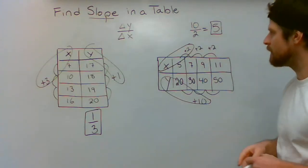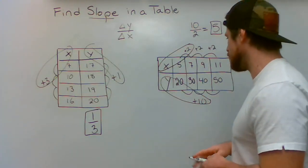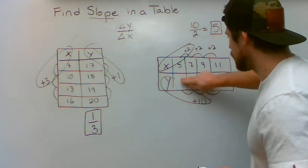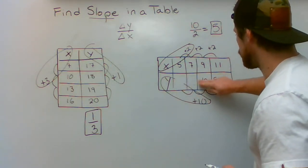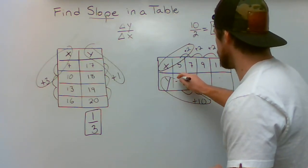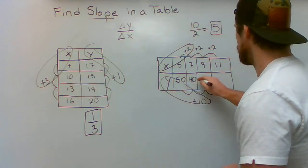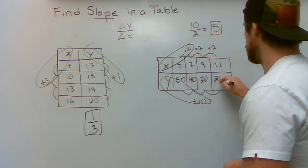Now, what if one was negative and one was positive? You're going to be taking a negative value. Let's say here I was going down instead of up. So let's just change that to 50, 40, 30, 20.